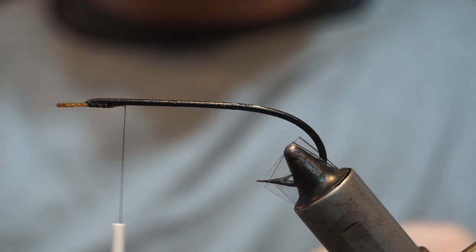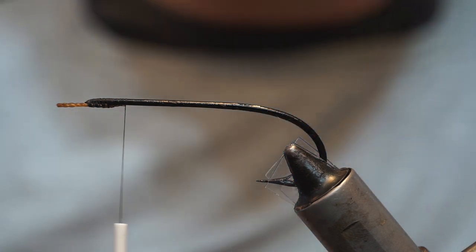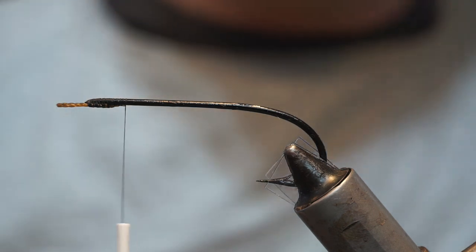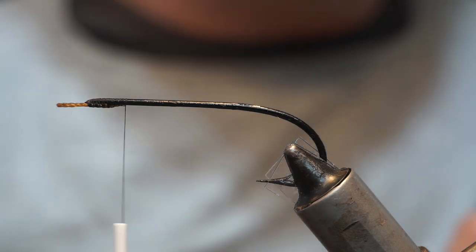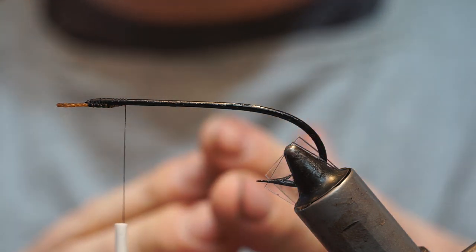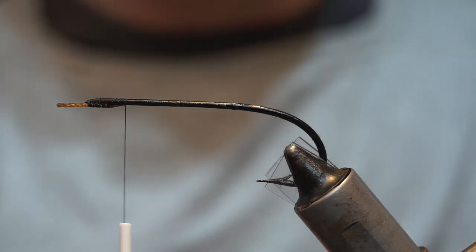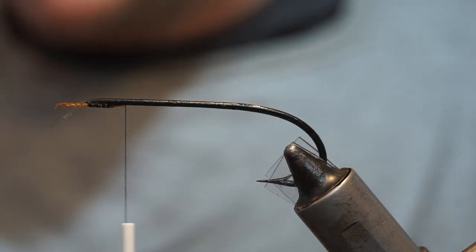This is white, but it does come in other colors, including black. This fly is going to have a silver tip and then a gold tag.